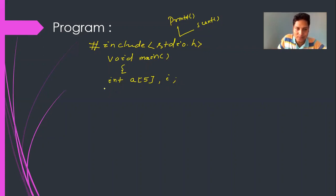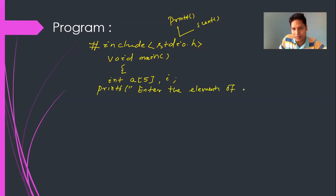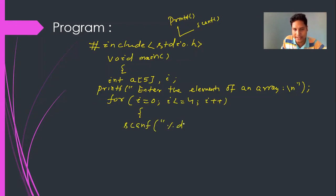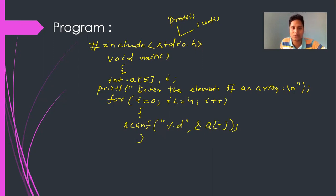Next, in the printf statement, I write 'Enter the elements of an array.' Then I use a for loop: for(i = 0; i <= 4; i++). Inside the loop, I write scanf("%d", &a[i]); — using this for loop I can enter five values for the array a.